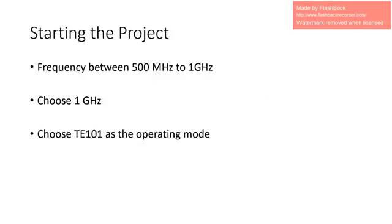So let's start the project. In our project, I am asked to design a cavity resonator that has a resonant frequency between 500 MHz to 1 GHz. I chose my resonant frequency, the frequency that I want the cavity resonator to work at, as 1 GHz. And I also chose the operating mode as TE101.